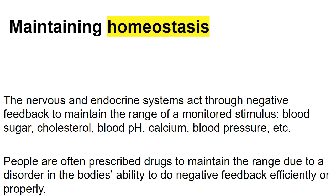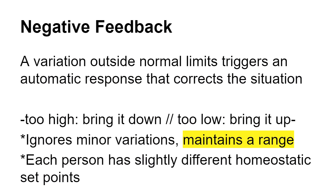If your blood sugar is always high, you have to take drugs to help bring it back down and maintain the range, because if you become diabetic, your body is no longer maintaining homeostasis on its own. A big thing when you hear negative feedback is you need to think about maintaining a range — if things get too high, you bring it down; if it's too low, you bring it back up. Things aren't perfectly flat-lined; they're always in a constant flux of going up and down, so we need to maintain normal limits, and when it gets outside those limits, we trigger a response.